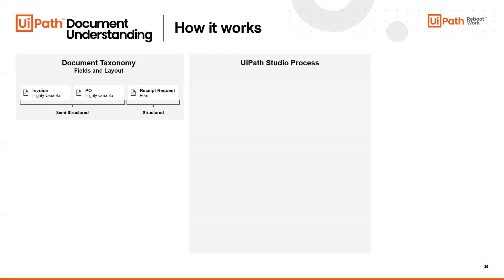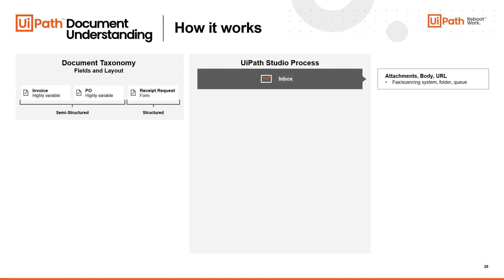Our blank canvas here to create this process is within UiPath Studio. The first thing we'll want to define is where the documents are coming in. In this case, we're showing an email inbox, though it could certainly be some sort of folder or a system with a queue. Because of the UiPath ecosystem, we have a lot of flexibility to grab that document at its first touchpoint into your business.